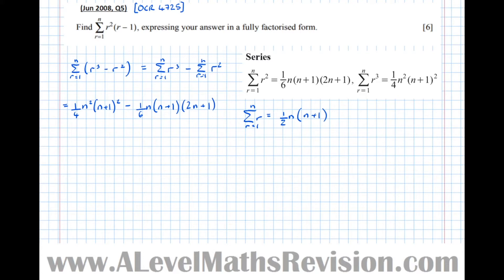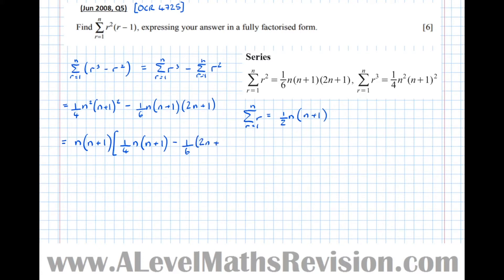Now the trick here is the factorisation. The trap you could fall into is trying to multiply it all out and refactorise, but there's no need. Because both expressions have both an n as a factor and an n plus 1. So I've taken an n and an n plus 1 out — they all have at least that in common. So that becomes a quarter times n times n plus 1, take a sixth, and we've already got the n times n plus 1 factorised out, so it just becomes a sixth times 2n plus 1.